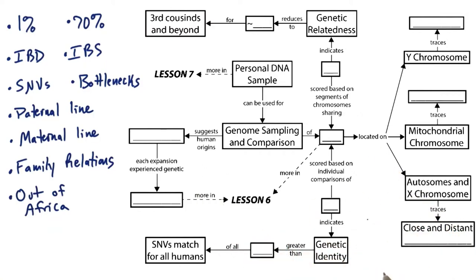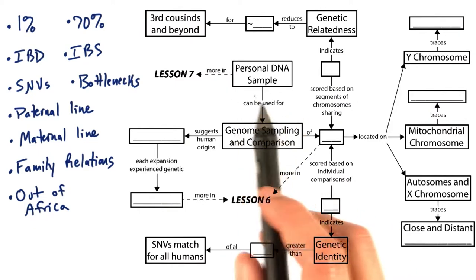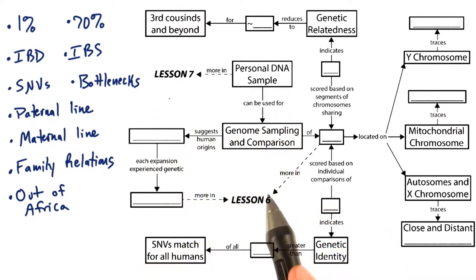Let's fill out this concept map and see how you did. Let's start with the personal DNA sample, which can be used for genome sampling and comparison. We learned how to acquire this personal DNA sample in Lesson 7.